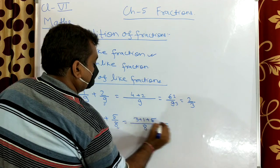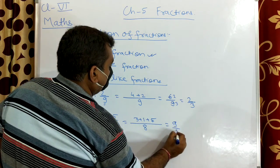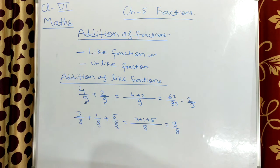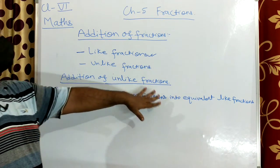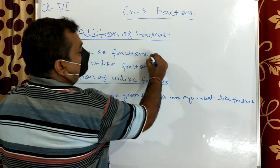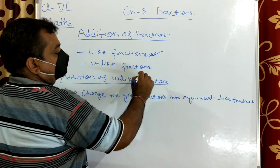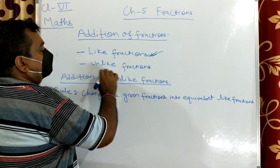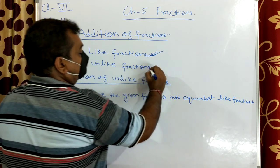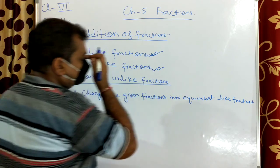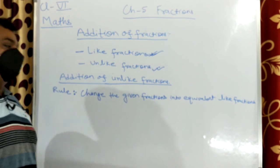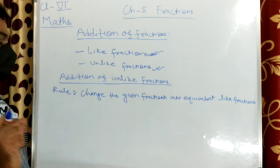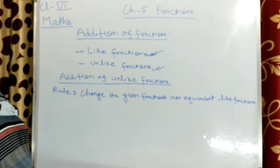Now we will study addition of unlike fractions. In unlike fractions the denominators are different. The rule is: whatever fractions are given, we will convert them into equivalent like fractions, and then do the addition.